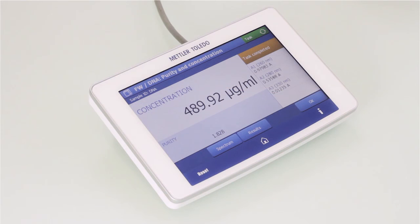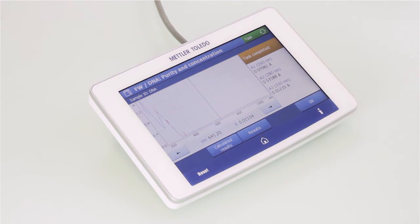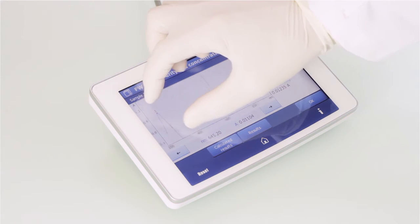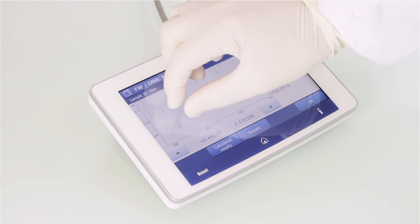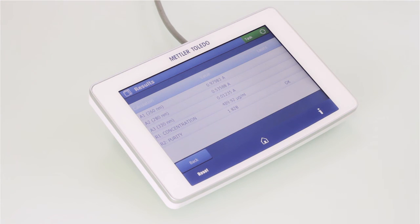The result is immediately displayed on the large color touchscreen which you can easily switch between the data view and the graphical view. Spectrum details can be zoomed in on with your fingers directly on the terminal.